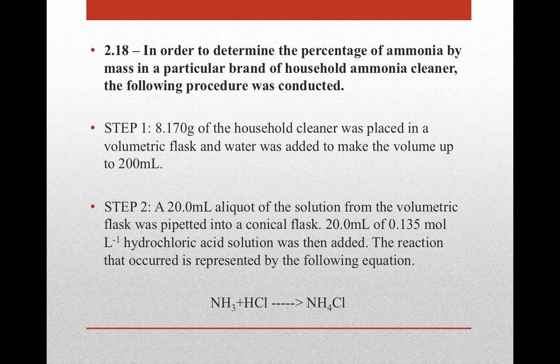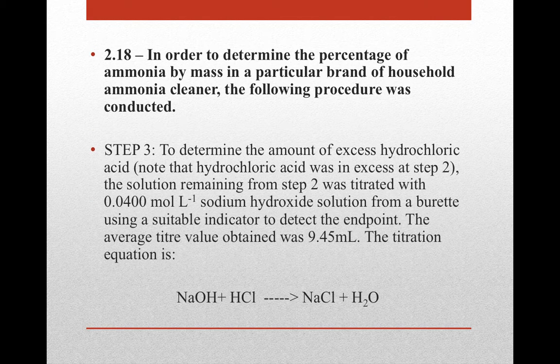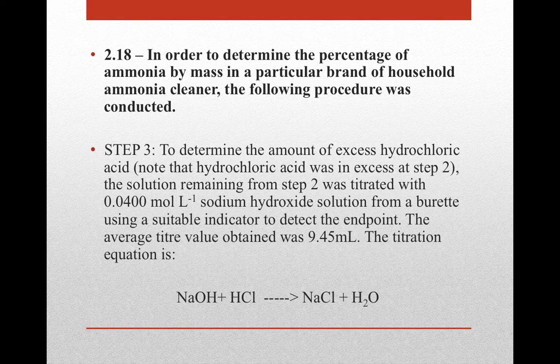Then 20 millilitres of a known concentration hydrochloric acid solution is added, and we have an equation for that reaction. The last step is to determine the amount of excess hydrochloric acid — because it was in excess in the previous step — by titrating it with NaOH (sodium hydroxide) using a burette, finding an average titer value. We also have an equation for that specific reaction.